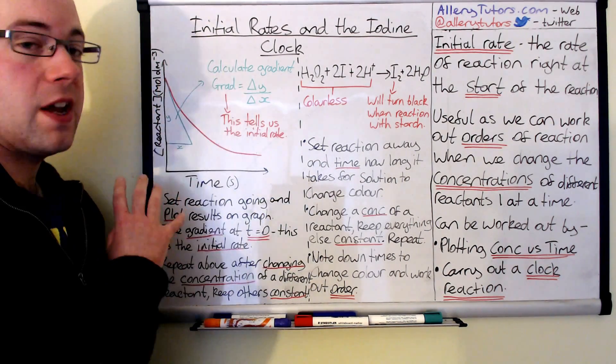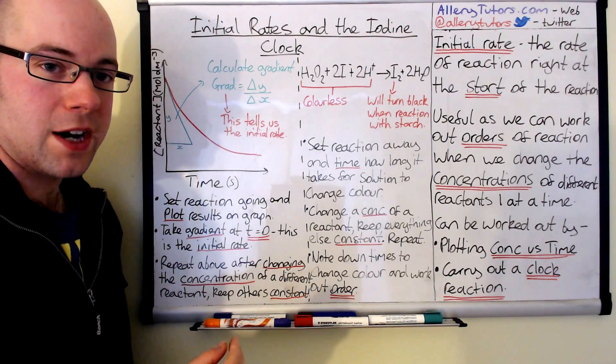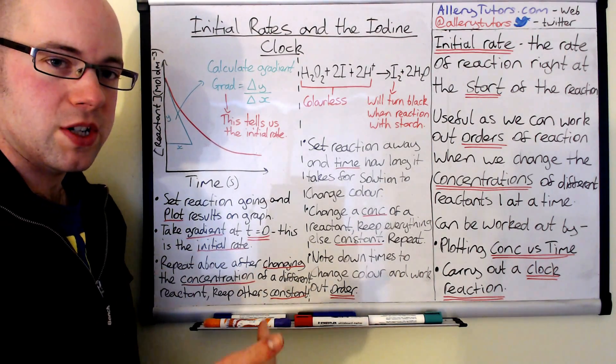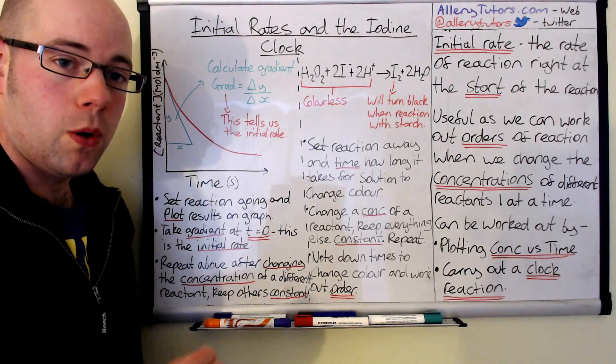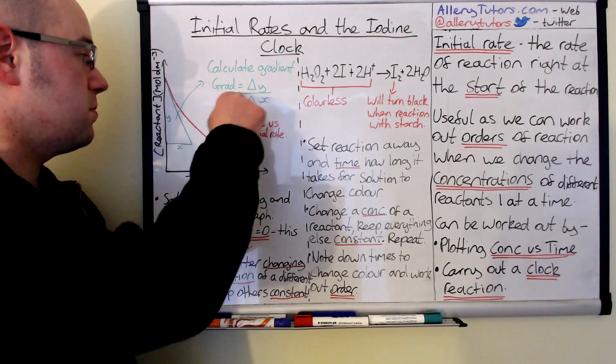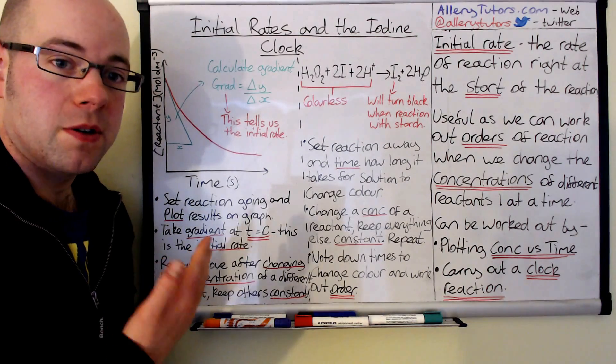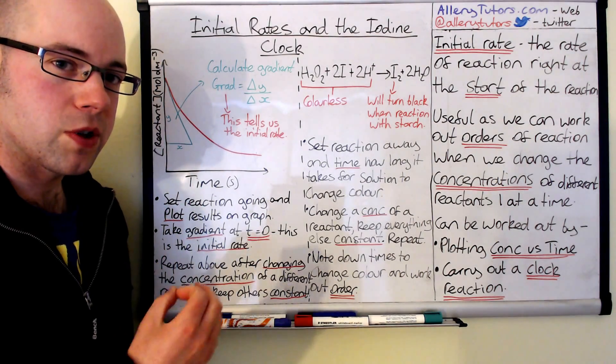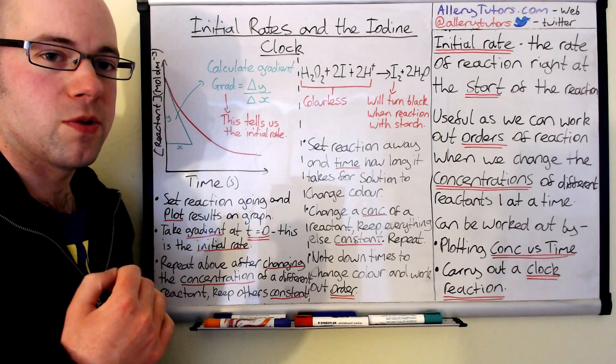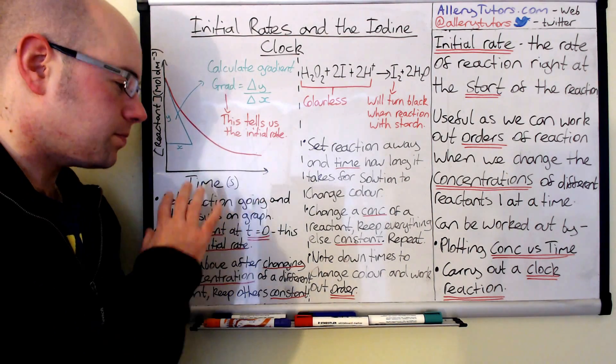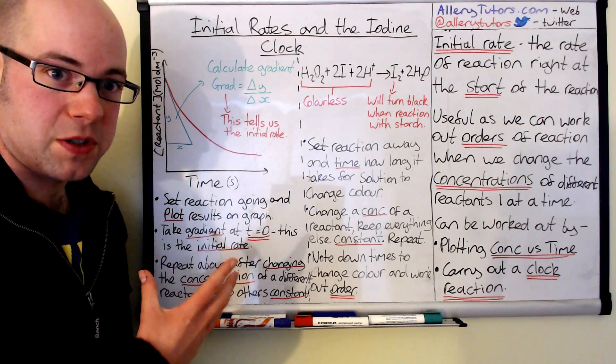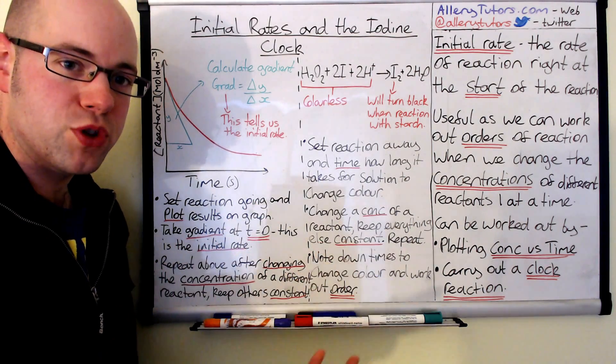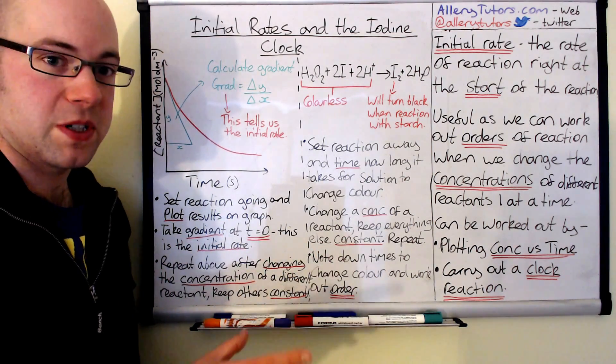We're going to start with the graph version here first. When you do a reaction you set it away and you're monitoring the rate at which either a reactant is used up like this graph, or a product is produced which would mean it would go the other way. In this case we're going to look at reactant being used up, and you would do that either by looking for colour change or you might look for a change in mass or you might be looking for a product that's being produced. For example, if it's a gas you would measure how much gas was being produced over a specific time period.